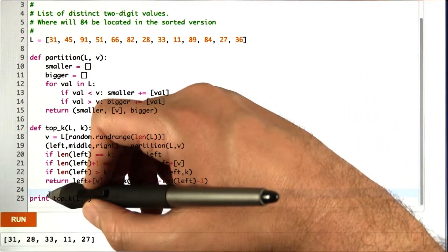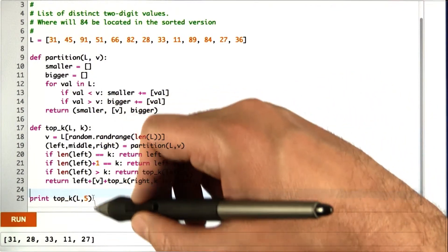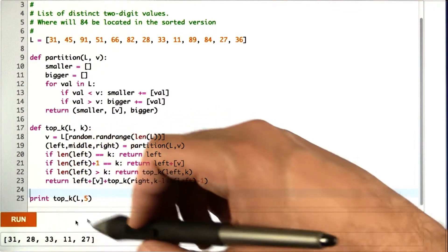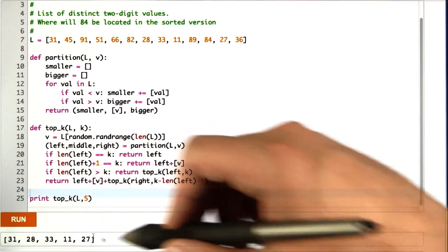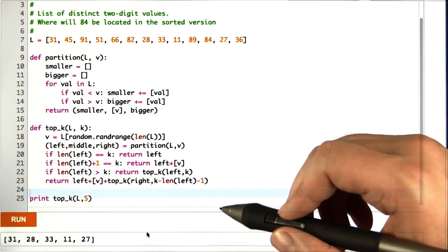So we call print top k of L5, and we get back 5 elements. Not sorted, but these are exactly the 5 smallest elements of L. So it did the work.